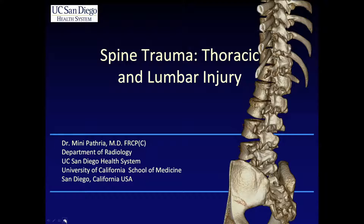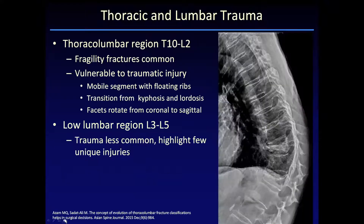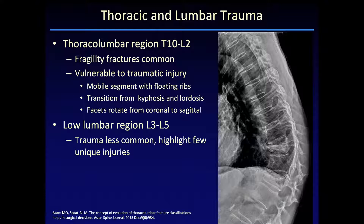We're going to focus on the lower thoracic spine and the lumbar spine. This is a very common area of injury that we encounter in our clinical practice. We see so many injuries around this area for two reasons: it's the most common site of injuries in patients who have osteoporosis, so fragility fractures are seen, but we also see a lot of purely traumatic injuries at the lower thoracic and lumbar spine.